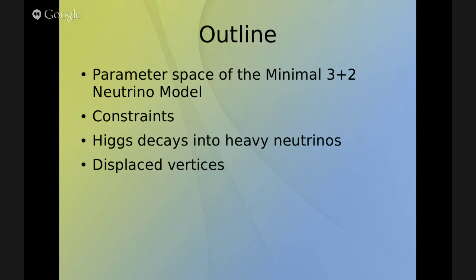This is the outline of the talk. First, I'm going to talk about the parameter space of the model, then we shall apply some constraints on it, and then we'll go into the observables we're interested in — namely the Higgs decays into heavy neutrinos, assuming the heavy neutrinos are lighter than the Higgs, and the decay of the heavy neutrinos through a displaced vertex signal.